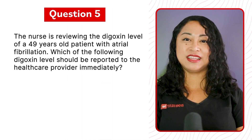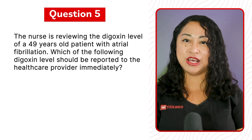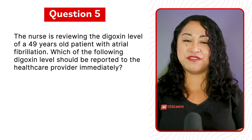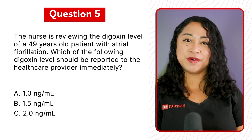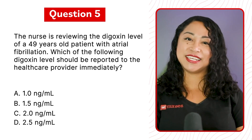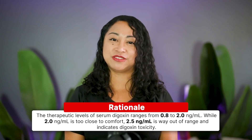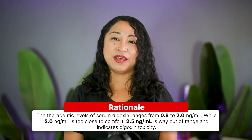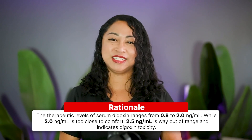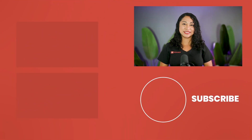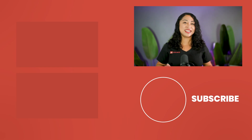Question 5: The nurse is reviewing the digoxin level of a 49-year-old patient with atrial fibrillation. Which digoxin level should be reported to the healthcare provider immediately? A. 1.0, B. 1.5, C. 2.0, or D. 2.5. The correct answer is D — 2.5 ng/mL. The therapeutic level ranges from 0.8 to 2.0 ng/mL. While 2.0 is close to the upper limit, 2.5 is out of range and indicates digoxin toxicity. Thanks for completing the 5 NCLEX practice questions — check out the next video for more essential nursing tips and let's get NCLEX ready together!